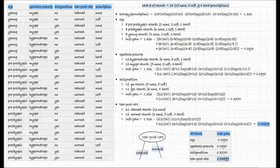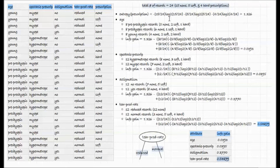Here we repeat the same calculation for the contact lenses dataset. We have 24 records — of those, 15 are none, 5 are soft contact lenses, and 4 are hard contact lenses prescriptions. We calculate the entropy for the entire dataset: minus 15/24 * log base 2 of 15/24, minus 5/24 for soft contact lenses, and minus 4/24 for hard contact lenses, obtaining this number.